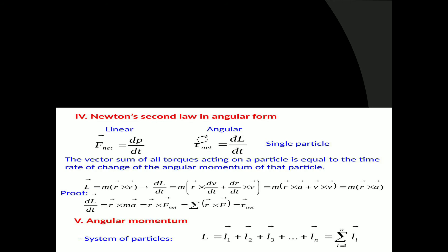Now let us see the derivation for angular momentum in terms of torque. In linear momentum, we have seen that net force is equal to dP upon dt. Similarly, we can write in the form of torque for angular momentum. Torque is represented by the symbol tau. So net tau is equal to dL upon dt. This is for a single particle. But if there are N number of particles present, then the vector sum of all torques acting on a particle is equal to the time rate of change of angular momentum of that particle.